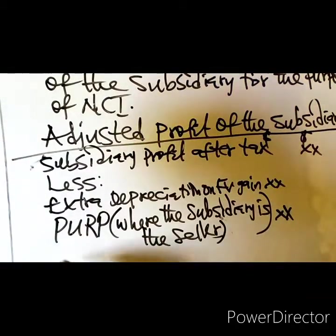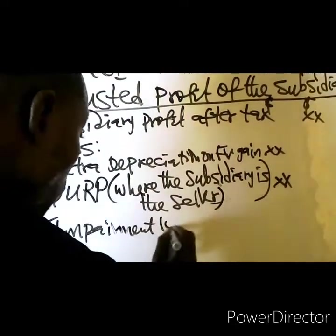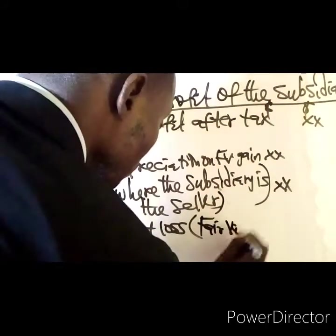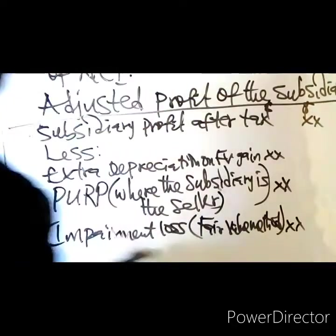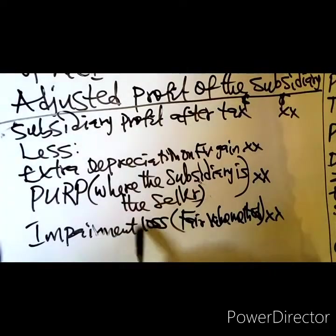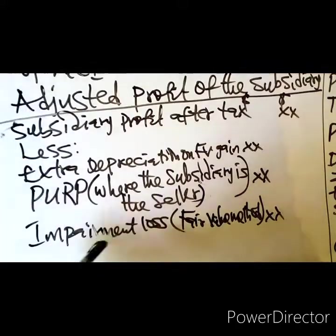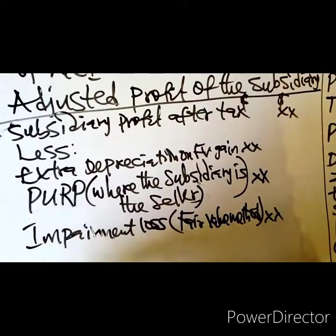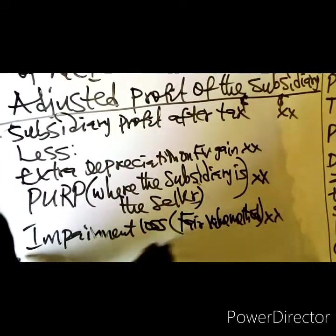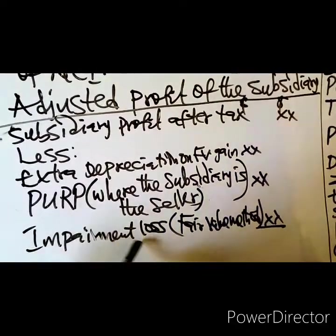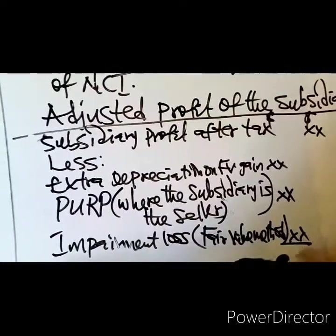Number three: impairment loss. Where the parent company's policy as to the valuation of non-controlling interest is fair value, it is then you will need the impairment loss here. Where the policy is proportionate share of net assets, you don't need it here. Where the policy is fair value, the impairment loss will be shared between parent and NCI — that is why we adjust that impairment loss in the subsidiary's profits.